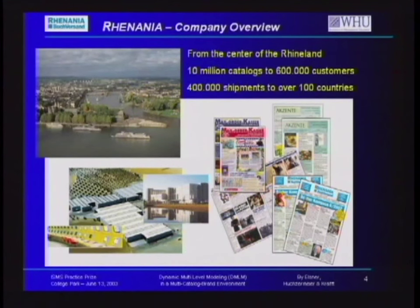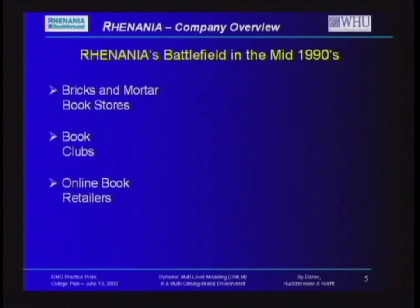Let me give you a short rundown on Renanya. From the center of the Rhineland, we send 10 million catalogs to 600,000 customers, with 400,000 shipments to over 100 countries per year leaving our fulfillment center. Renanya is selling books, mostly deal-listed videos, CDs, and DVDs. Our target group is defined as well-educated consumers looking for reasonably priced products. There is no contract between us and our customers, so our customers are absolutely free in their buying decision.